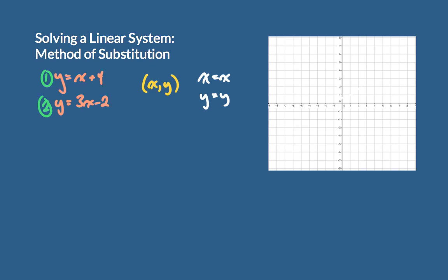So we can start by asking ourselves: what does y equal in the first equation? It's right there — y equals x plus 4. And what does y equal in the second equation? Well, it equals 3x minus 2. Now if y has to equal y, we can take what y equals in the first one and set it equal to what y equals in the second one.